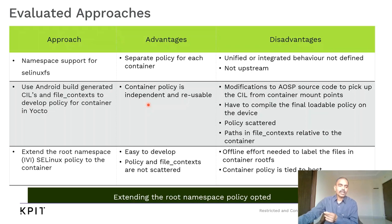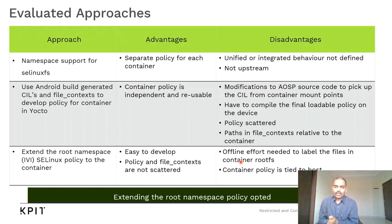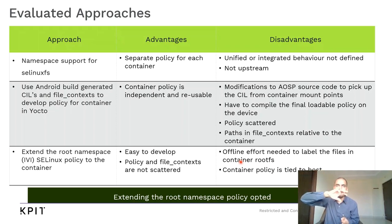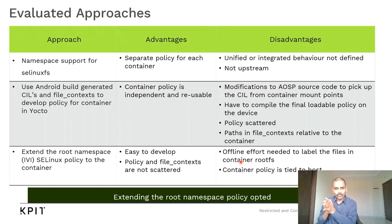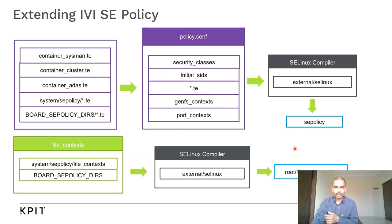The third approach, which we zeroed in on, has two major advantages: it's easy to develop, and the policy and file contexts are not scattered. The downside is that offline effort is needed to label files in the container rootfs, and the container policy and file contexts are tied to the host — you can't just take the container image with SELinux labels and use it in another project. Considering the ease and advantages, we selected the third approach.